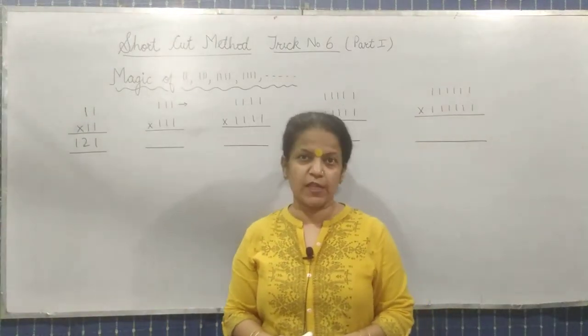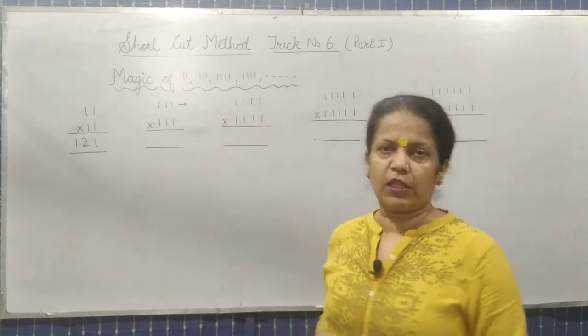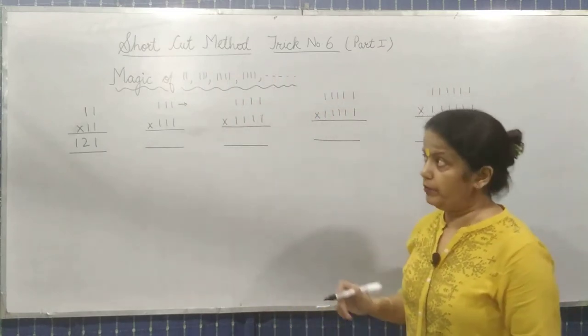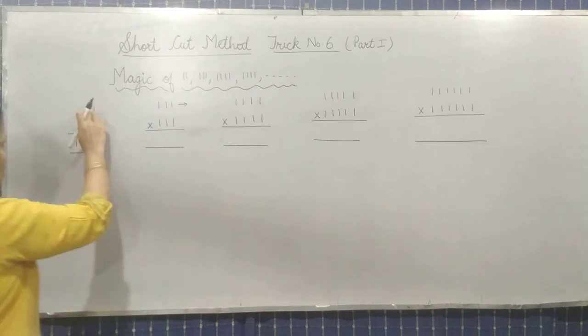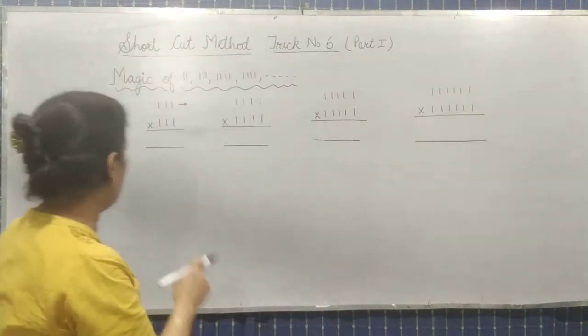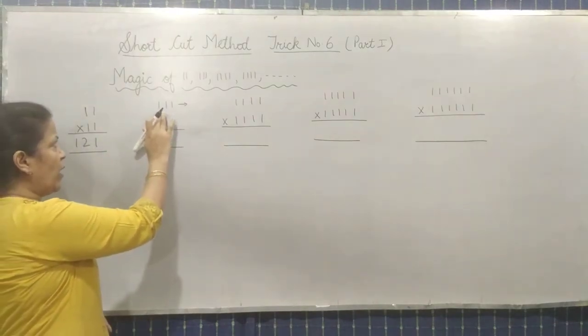Welcome with trick number 6. The trick number 6 is related to magic of 11's. Now first one: 11 into 11, 11 multiply 11. What is it? 121. You know it very well. Now if you see next one.